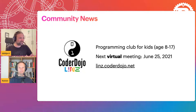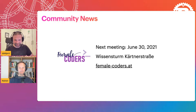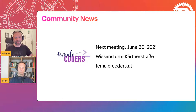Next week there will be an in-person meeting of our local female coders study group. They meet at the Wissensturm in the Kärntnerstrasse. It's a study group for all people who consider themselves female, and you can get all the information at female-coders.at.